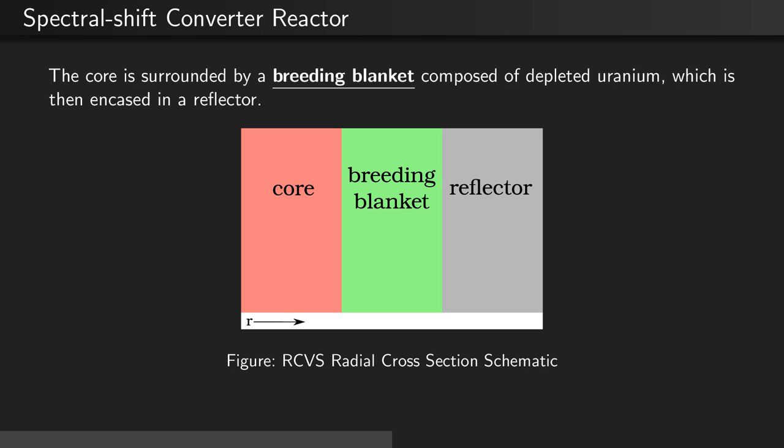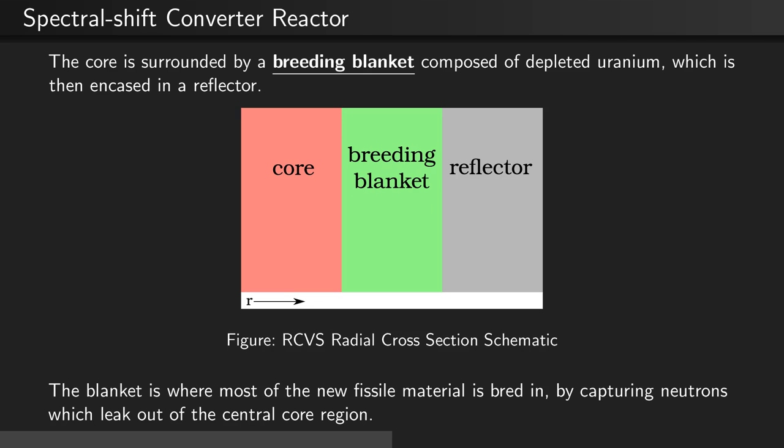The core is surrounded by a breeding blanket composed of depleted uranium, which is then surrounded by a reflector, as can be seen in this radial figure. The blanket of depleted uranium is where most of the new fissile material is bred by capturing neutrons which leak out of the central core region.